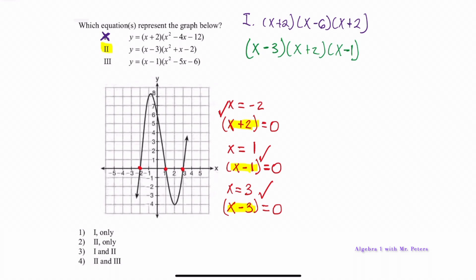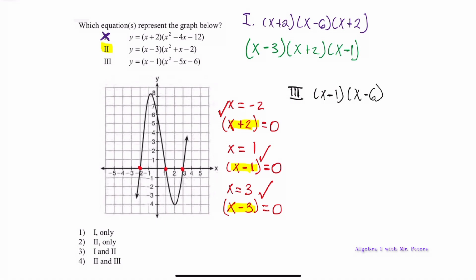Checking equation 3: the first factor is x − 1, and factoring x² − 5x − 6 gives us (x − 6)(x + 1). When we look at these factors, they are also incorrect because we do not have the same zeros. So the correct answer is equation 2 only, because it is the only equation where we get all three matching zeros.